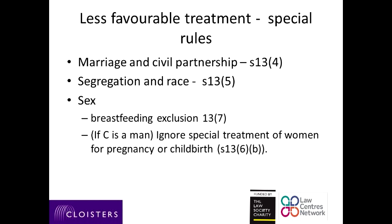There are special rules in relation to less favourable treatment and marriage and civil partnerships as we have seen, and in relation to race and segregation. Segregation because of race is a form of less favourable treatment. There are also special rules in relation to sex discrimination. Under Section 13.7 there is an exclusion from less favourable treatment based on breastfeeding, and where the claimant is a man you have to ignore the special treatment of women for pregnancy or childbirth, and that's a result of Section 13.6(b).